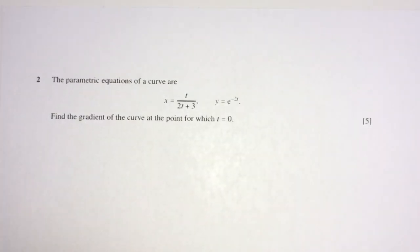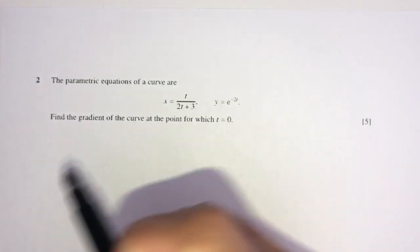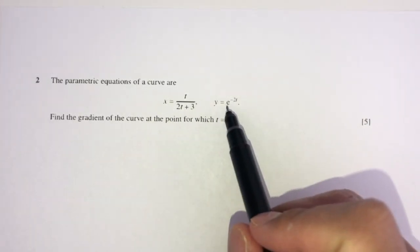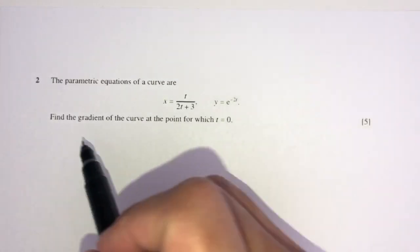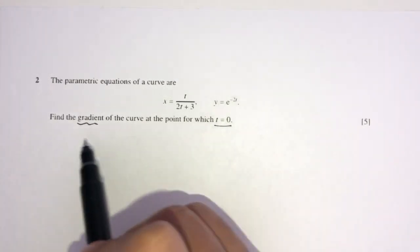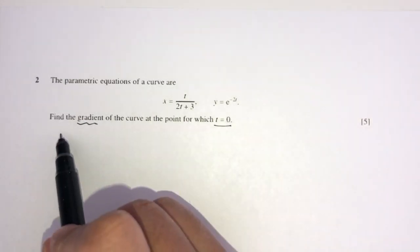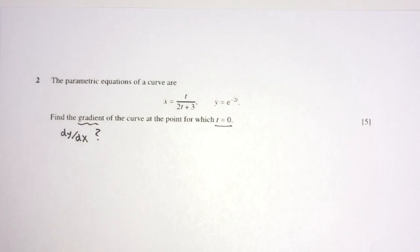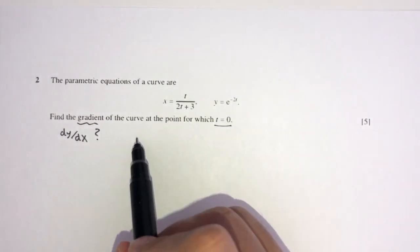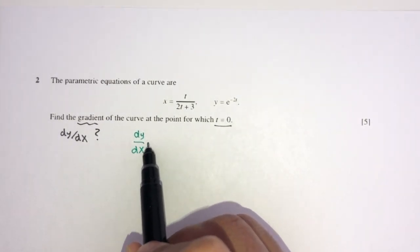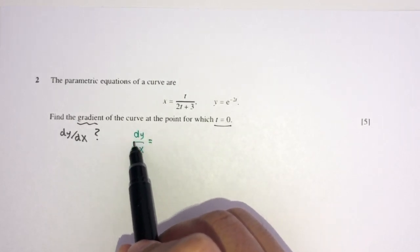Now let's move on to question number 2. We have parametric equations: x = t/(2t + 3) and y = e^(−2t). We need to find the gradient of the curve when t = 0. The gradient is dy/dx, which we find using the chain rule: dy/dx = (dy/dt) × (dt/dx).